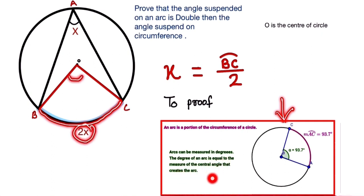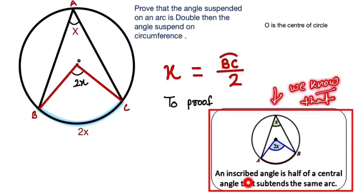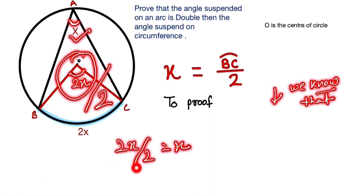By using this theorem, we know that when the arc is given in degrees, the angle at the center equals 2x. By this theorem, the angle at the center is always double the angle at the circumference. So dividing by 2 gives us x.